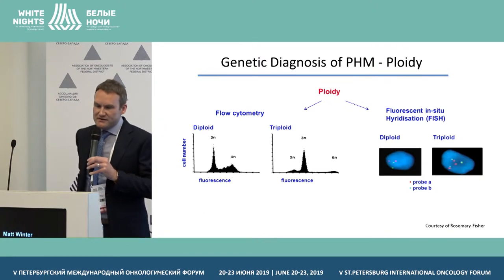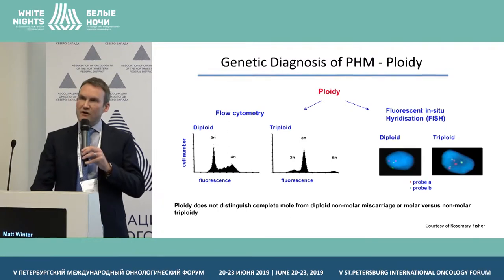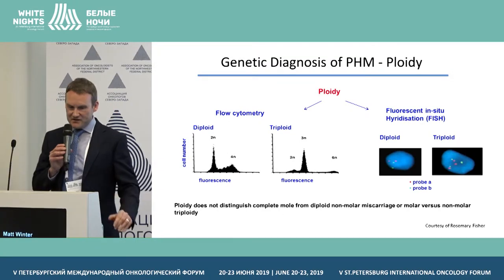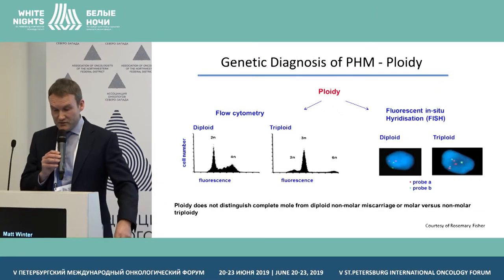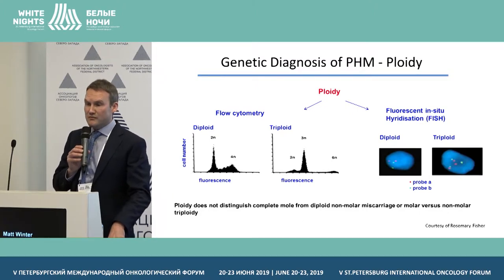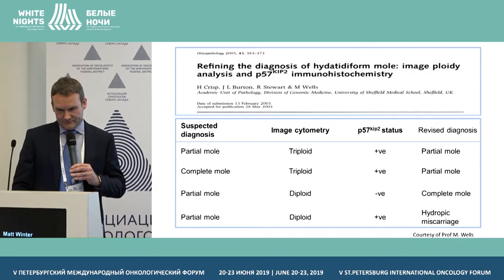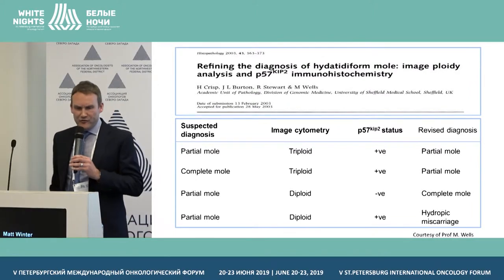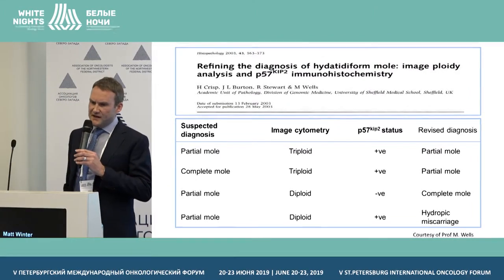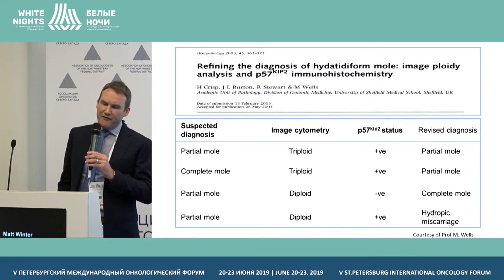Ploidy analysis by flow cytometry and FISH can also be helpful in separating between a diploid and a triploid conception, but it does not distinguish between a complete mole and a diploid non-molar miscarriage, or between molar and non-molar triploidy, for which molecular investigations would be required. This was shown in a paper published by the Sheffield Pathologists demonstrating the importance of using ploidy analysis and P57 in the refinement of a local diagnosis to a central diagnosis.